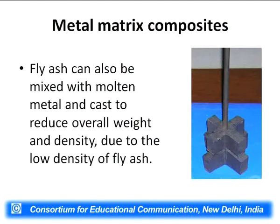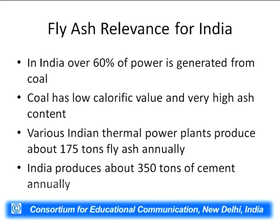Fly ash can also be utilized for metal matrix composites. Fly ash can be mixed with molten metals and cast to reduce overall weight and density due to the low density of fly ash, thus making metal composites lighter than the original metal blocks. As far as its relevance to India is concerned, in India over 60 percent of power generation is from coal. Coal has a low calorific value and very high ash content. Various Indian thermal power plants produce about 175 million tons of fly ash annually. India produces about 350 million tons of cement annually.